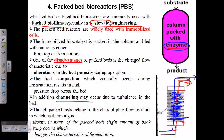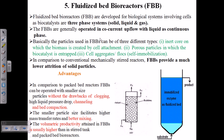In many packed beds, a slight amount of back mixing also occurs which changes the characteristics of the fermenter. To address these disadvantages of channeling and bed compaction, we can utilize a material to make the bed that is much better than using wood chips and inert materials. Nowadays we utilize a fluidized bed instead of the solid base.